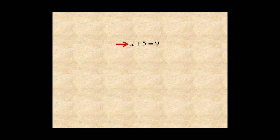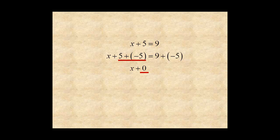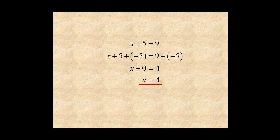Here's an example that shows how these properties are used to solve an equation. Begin by adding negative five to both sides. The inverse property makes five plus negative five equal to zero. And the identity property makes x plus zero equal to x. On the right side of the equation, nine plus negative five is four. So the inverse and identity properties of addition were used to isolate the variable and find a solution to the equation.